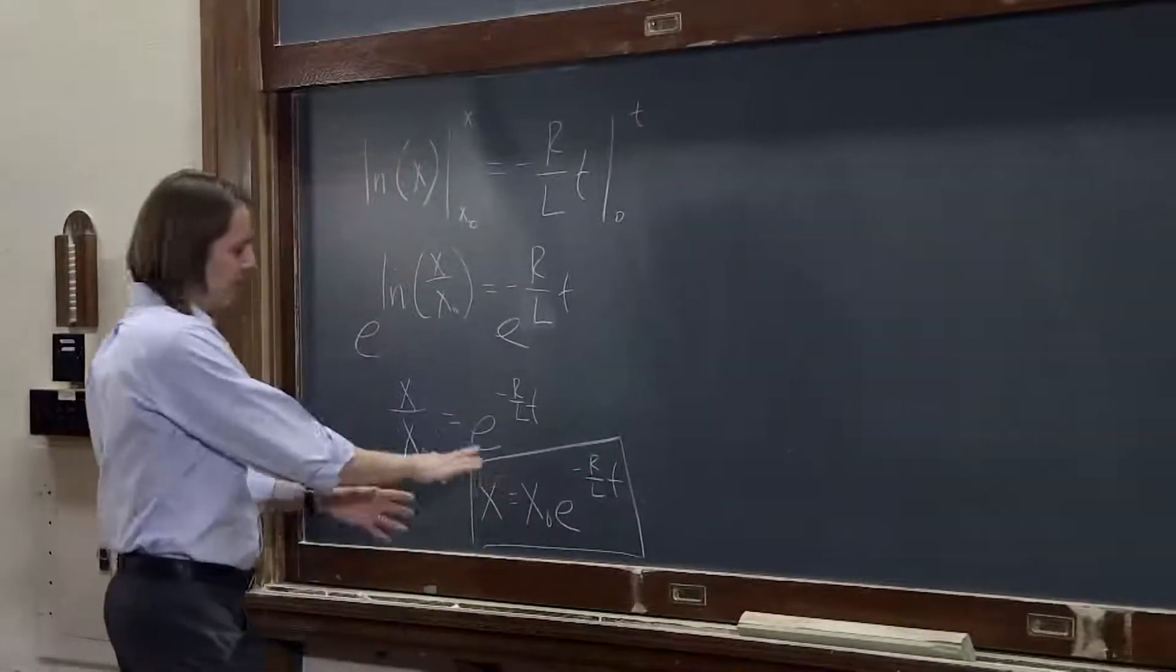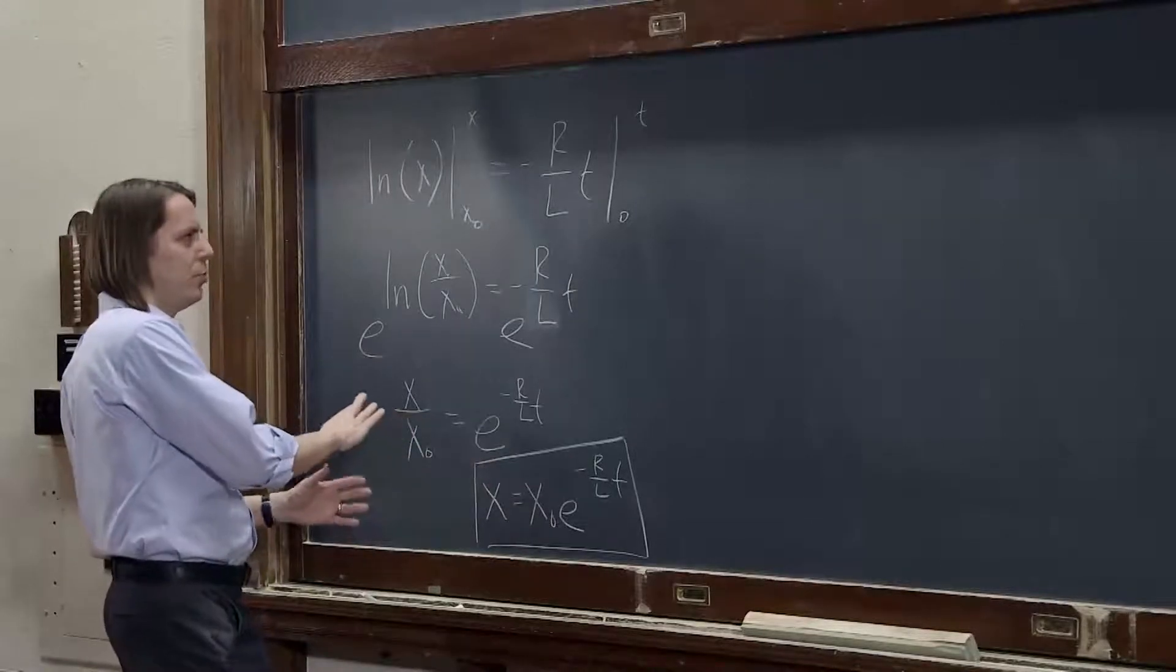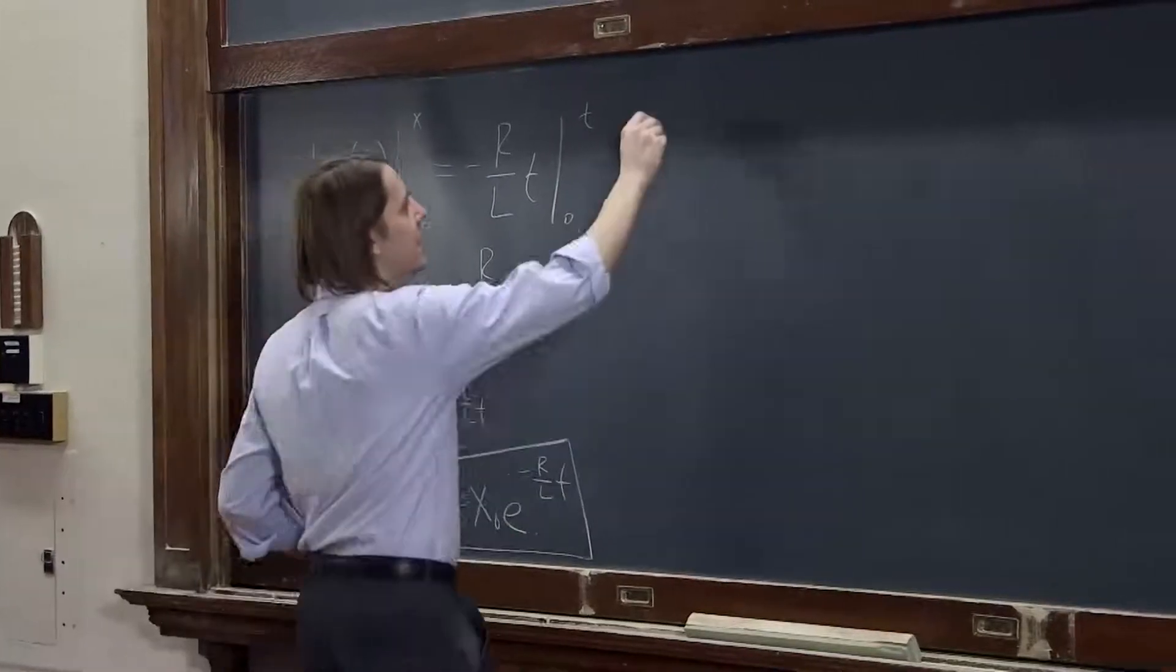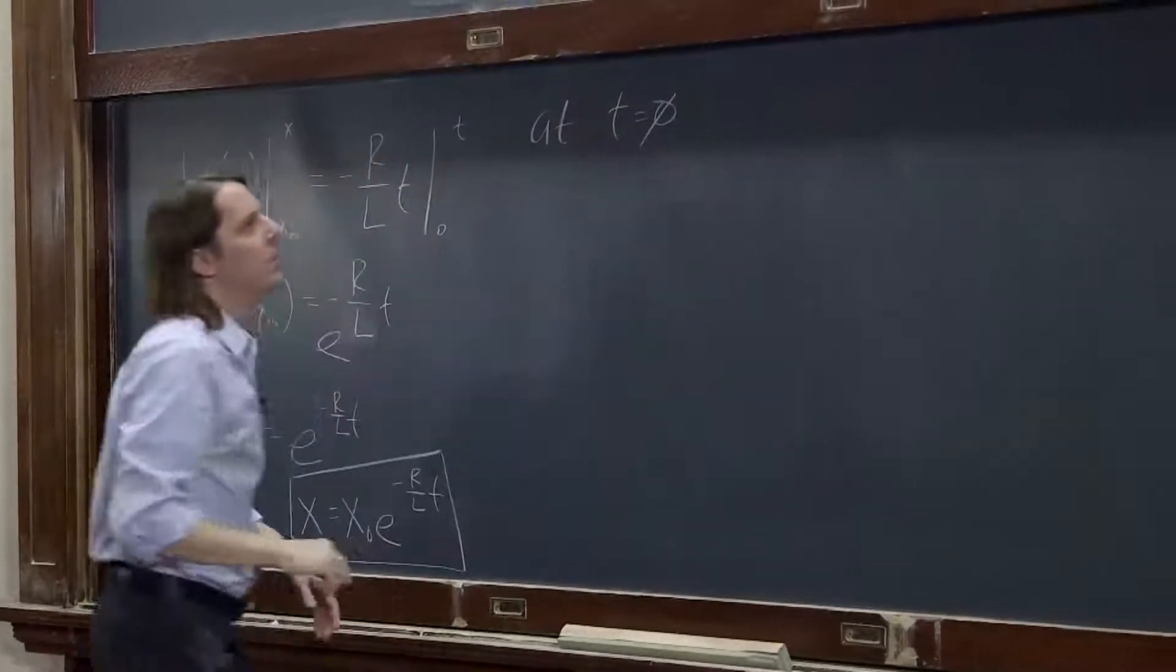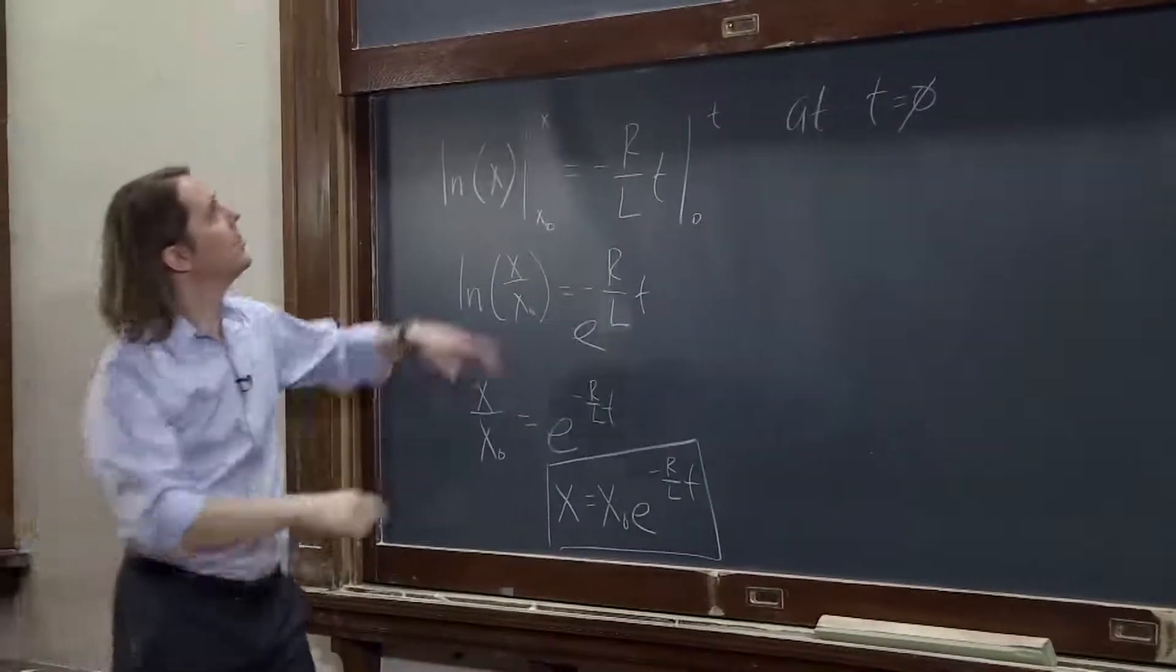So now let's go and get back from x naught and x to real things. At t equals 0, let's think about the real circuit. Let me look at it again real quick.